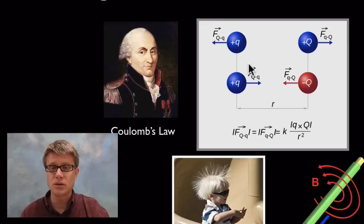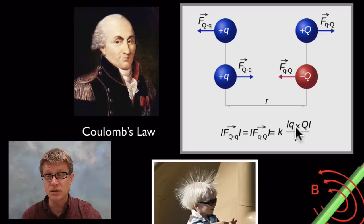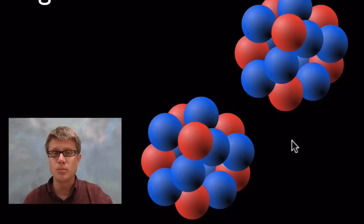Coulomb figured out electric forces, giving us Coulomb's law, which looks a lot like Newton's law of universal gravitation. Instead of two masses, we have two charges. If they're like charges — both positive — they repel each other; if they're opposite, they attract. We have Coulomb's constant, multiply the two charges, and divide by the radius squared. The closer the two charges, the greater the force of attraction or repulsion.